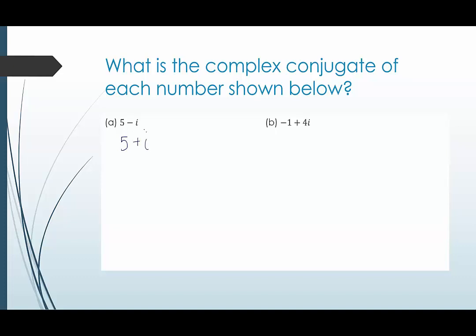And letter b, we have negative one plus four i. Keep the real part the same, just change the sign of the imaginary part.